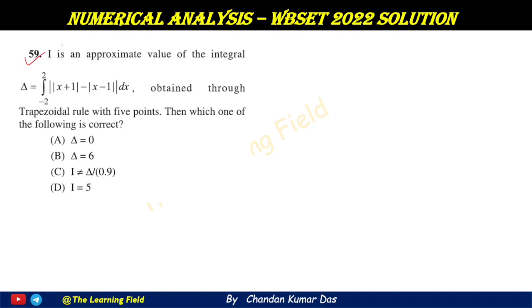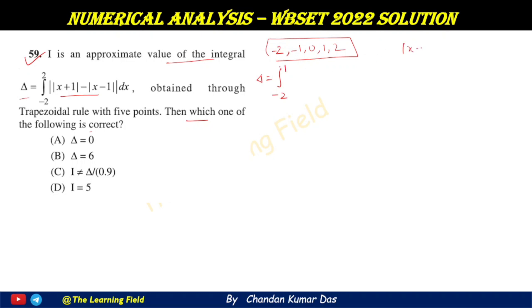Question number 59: I is an approximate value of the integral δ obtained through the trapezoidal rule with five points. Which of the following is correct? We break the interval using five points: −2, −1, 0, 1, and 2. We also define the modulus function: |x + 1| equals (x + 1) if x > −1, and −(x + 1) if x < −1.